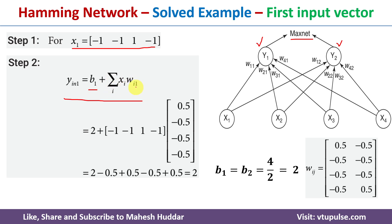Here Wi1 means we are calculating the net input at Y1, so i ranges from 1 to 4. This gives us X1·W11 + X2·W21 + X3·W31 + X4·W41, which is (−1)·W11 + (−1)·W21 + (1)·W31 + (−1)·W41. The weights W11=0.5, W21=−0.5, W31=−0.5, W41=−0.5. After multiplication, summation, and adding the bias, we get the net input at Y1.